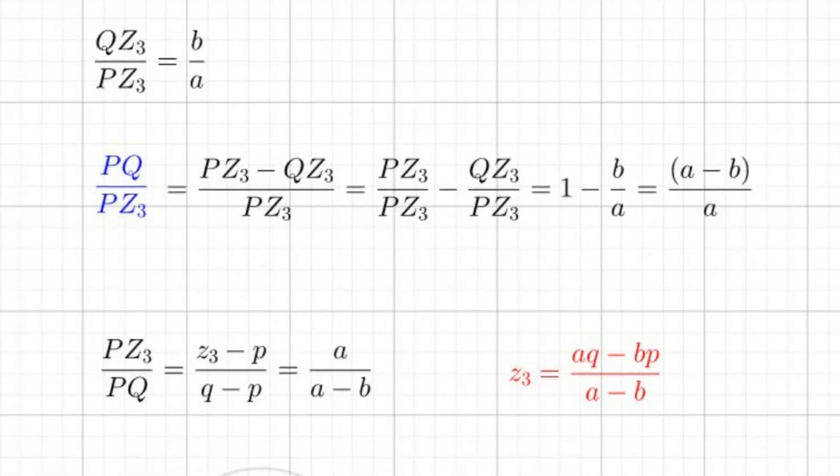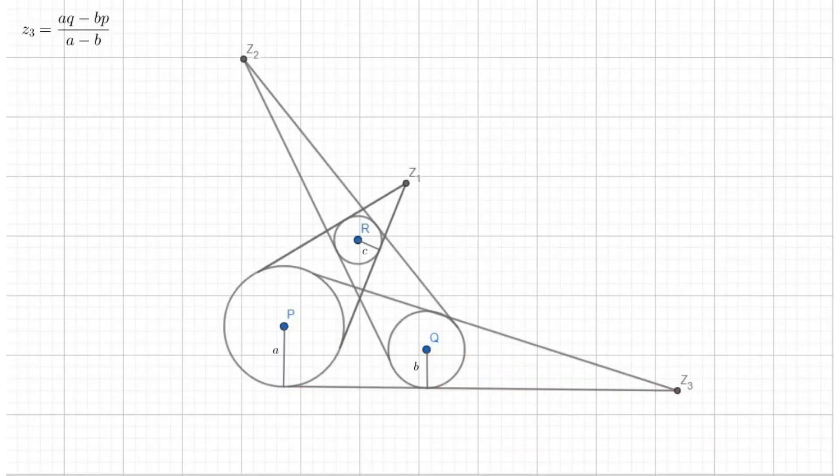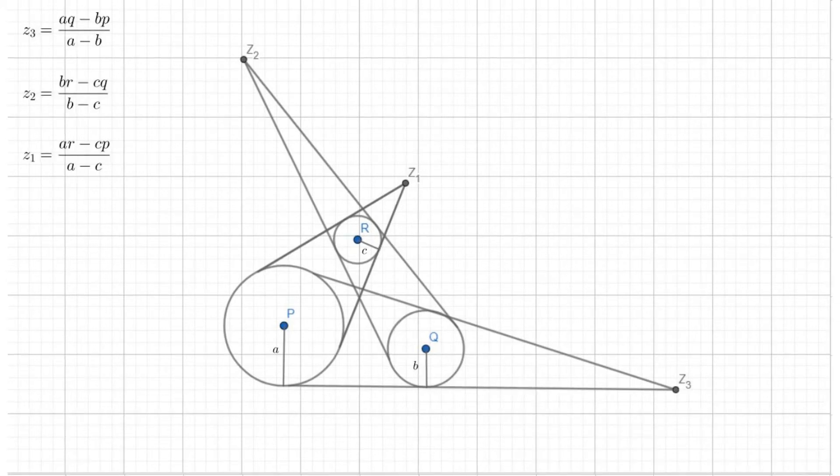So now that we have Z3 in terms of A, B, Q, and P, we can go back to our original diagram and by using the same process, write Z2 and Z1 in a similar fashion.